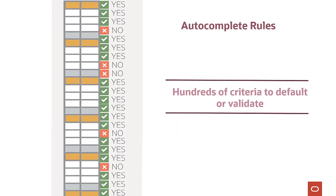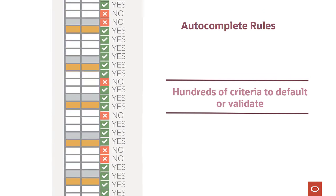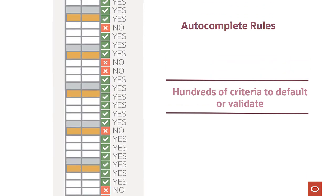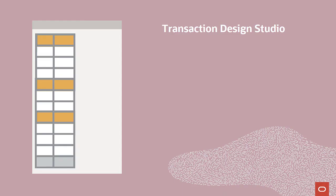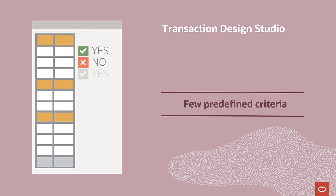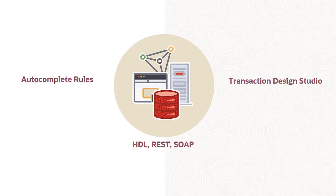Autocomplete Rules enables you to use hundreds of criteria to default or validate anywhere in a guided flow or static setup data. In Transaction Design Studio, you have just a handful of criteria to control when you want to show or hide certain fields or sections.